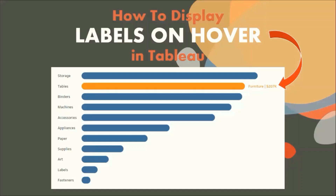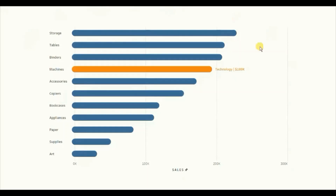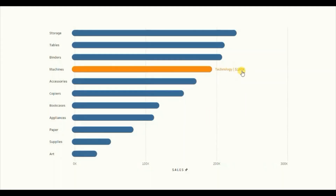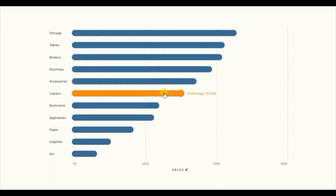Let me first show you the demo of what we will be doing today. Here I have a bar chart that shows sales done in case of different subcategories. You will notice that I haven't displayed the labels for all the bars to make a clean looking bar chart. The labels will be displayed only when we hover on the specific bar, and the color of the bar will also be different as compared to the other bars.